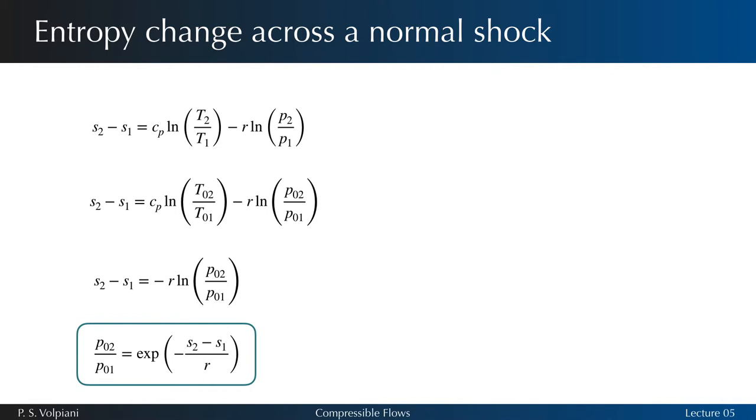Thus, if S2 minus S1 is greater than 0, the stagnation pressure decreases across a normal shock and its jump is a direct measure of the entropy variation.